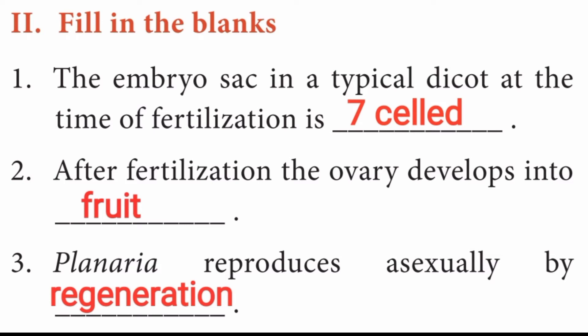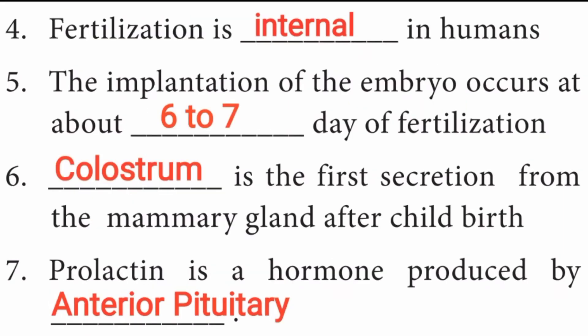Third question: Planaria reproduces asexually by dash. Answer is regeneration. Planaria reproduces asexually by regeneration. Fourth question: fertilization is dash in humans. Answer is internal fertilization, because fertilization in humans occurs in the oviduct of the female genital tract, usually in the ampulla of the fallopian tube. So human fertilization is internal fertilization.